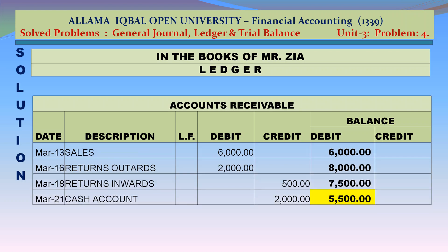Accounts receivable account: debit — sales March 13 Rs 6,000; return outwards March 16 Rs 2,000. Credit — return outwards March 18 Rs 500; cash account March 21 Rs 2,000. Closing balance: Rs 5,500 debit.